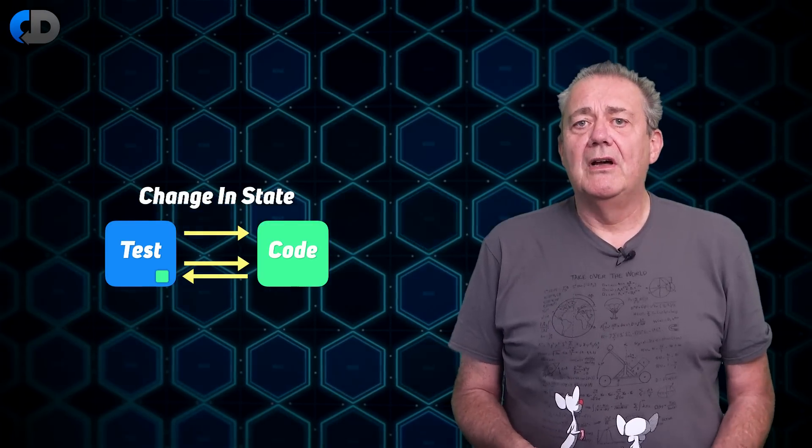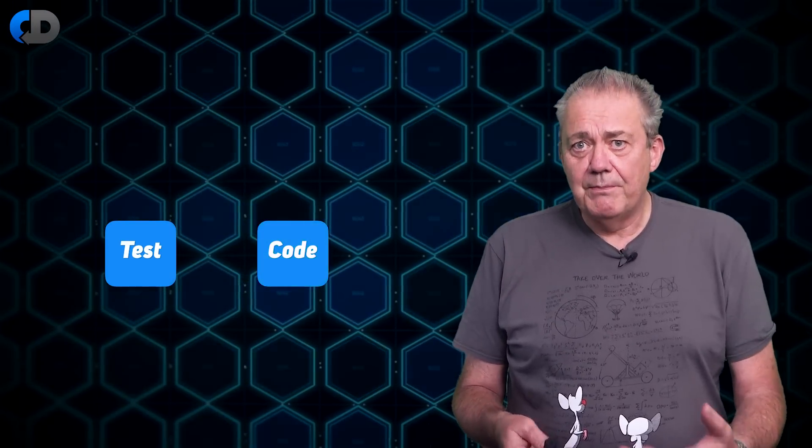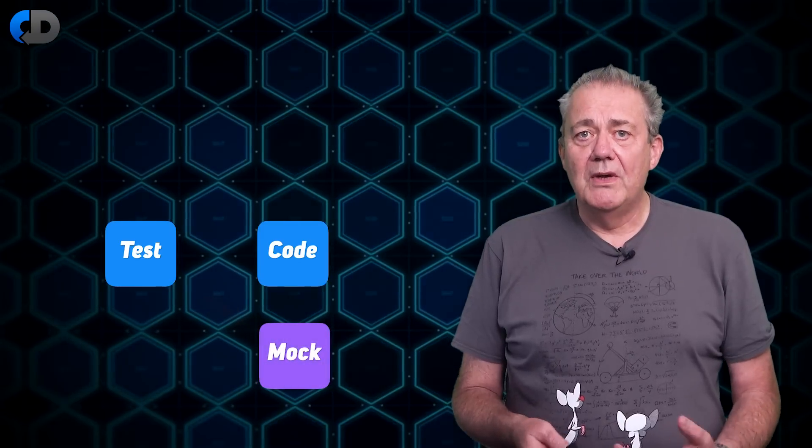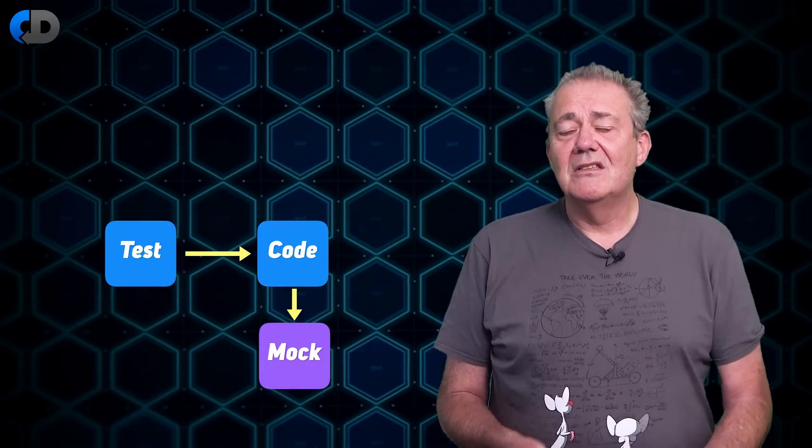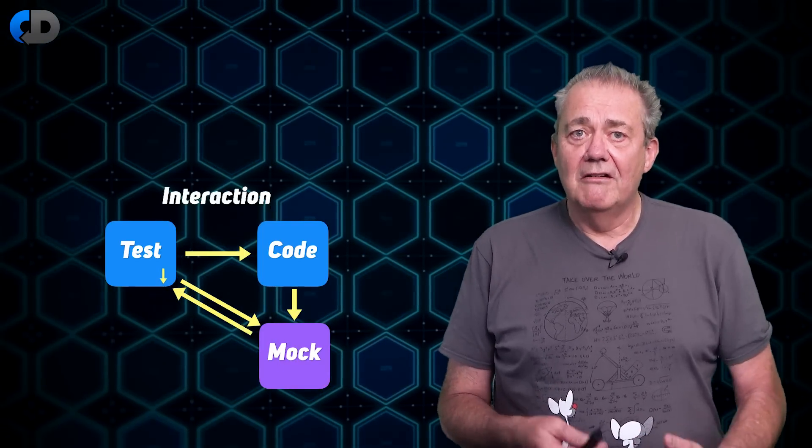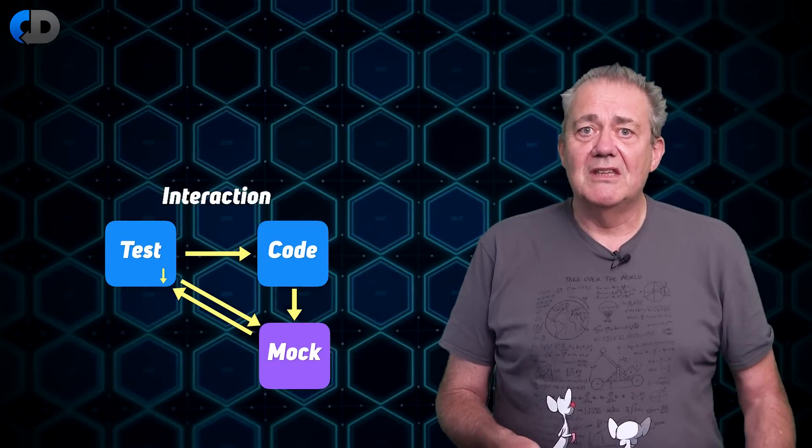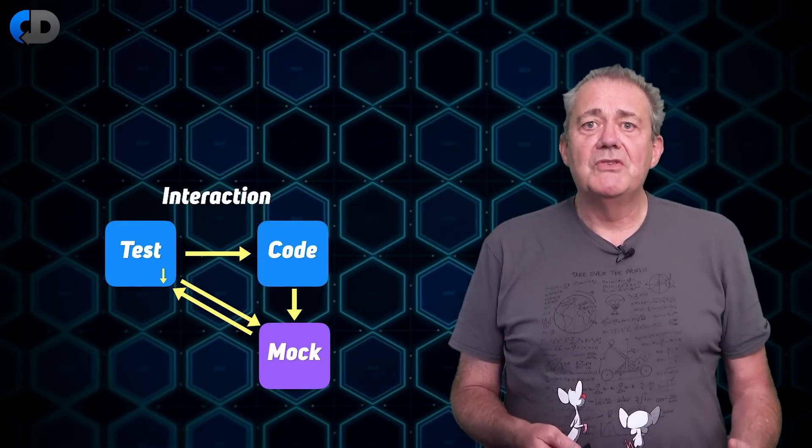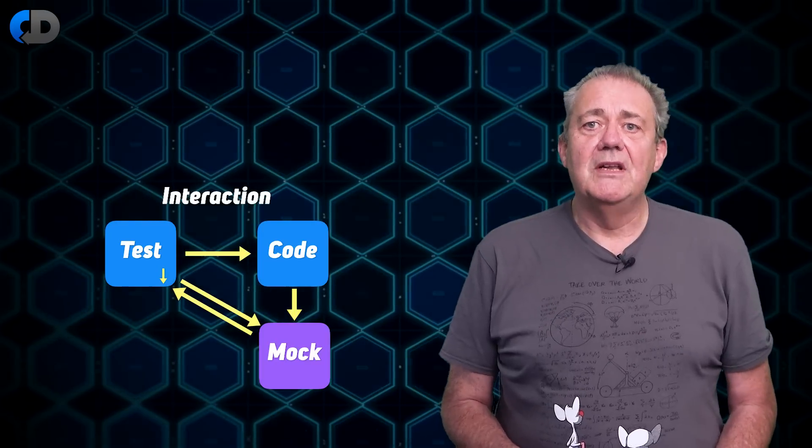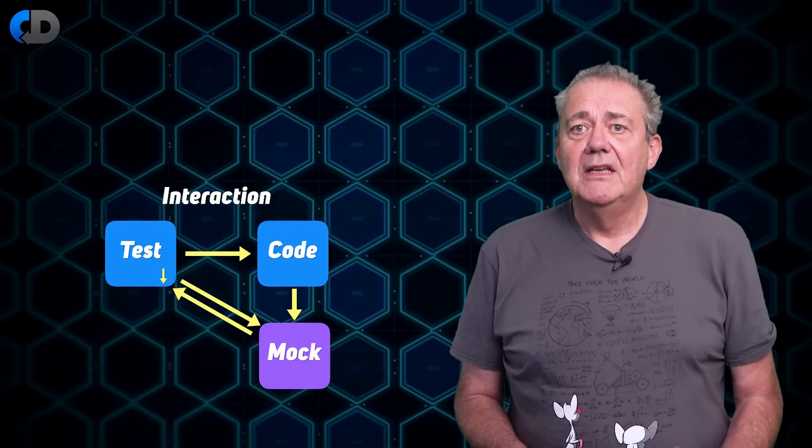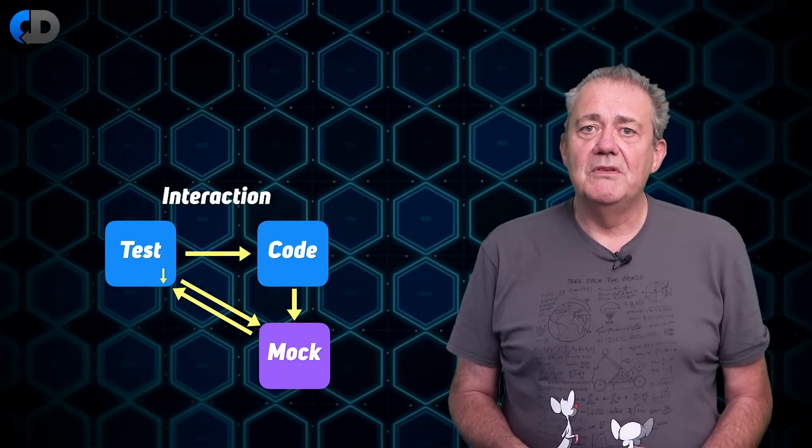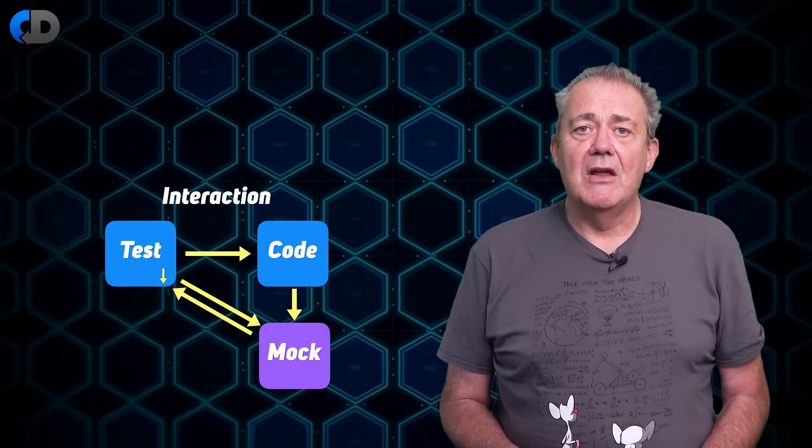But then there's another kind of outcome that we may perfectly reasonably be interested in. When we interact with code that we are testing, it in turn may need to interact with something else, and we'd like to confirm or assert that that interaction actually happened. This last one is the province of mocking and our focus for this episode. It's also the most complicated of the three types of unit tests and the easiest to get wrong.